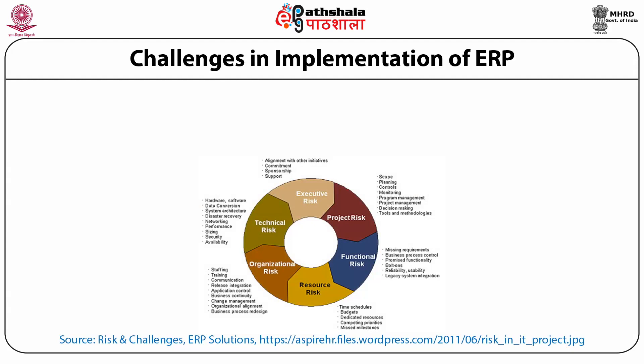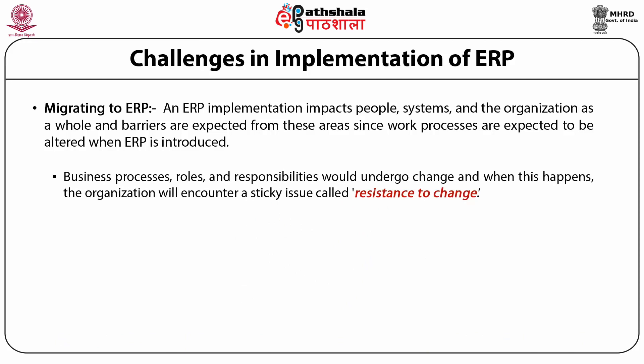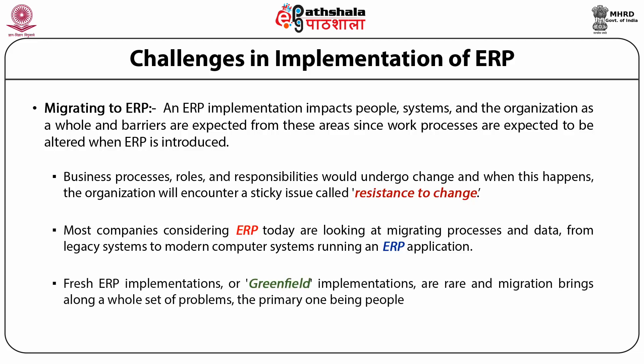Let us look at some of the challenges in implementation of ERP. The very first challenge is migrating to an ERP system. An ERP implementation impacts people, systems, and the organization as a whole, and barriers are expected from these areas since work processes are expected to be altered when ERP is introduced. Business processes, roles, and responsibilities undergo change, and when this happens, the organization will encounter resistance to change. Most companies considering ERP today are looking at migrating processes and data from legacy systems to modern computer systems running an ERP application. Fresh or greenfield ERP implementations are rare, and migration brings along a whole set of problems, the primary one being the people.